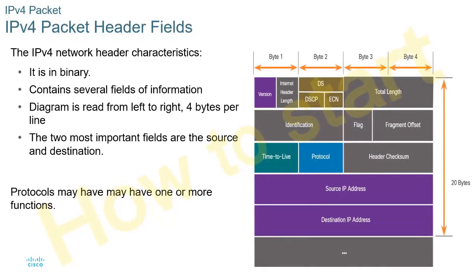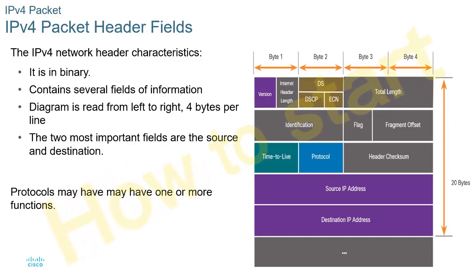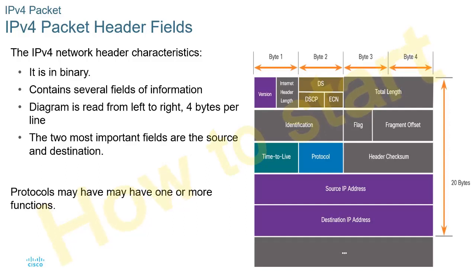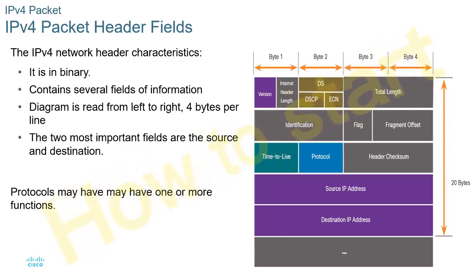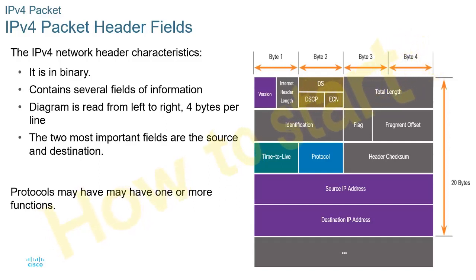What does an IPv4 packet header look like? First, you'll notice a version number, then a header length, then some type of priority, then a total length for the entire packet. We have an identification field, some flags, time to live, a header checksum to make sure the header is correct, and we have a source and destination address as well. The big ones to focus on are: version, protocol, time to live, and source and destination addresses.